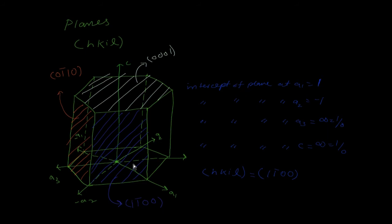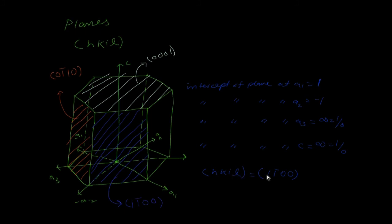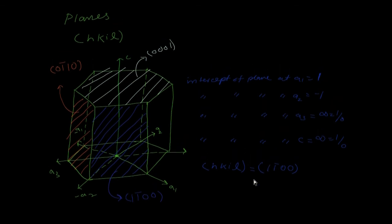We find the intercept of the plane with each axis. The intercept at a1 is 1. The intercept at a2 is -1 (it cuts minus a2 at one position). The intercept at a3 is infinity since the plane is parallel to that axis (1/∞ = 0). The intercept at c is also infinity (1/∞ = 0). Taking reciprocals, the indices h k i l are 1 1̄ 0 0.